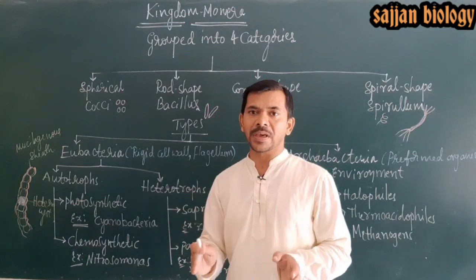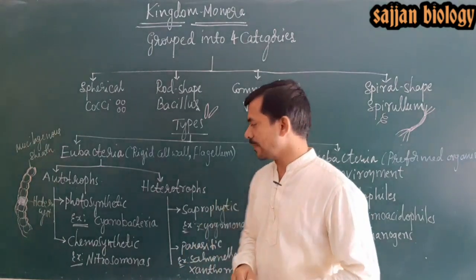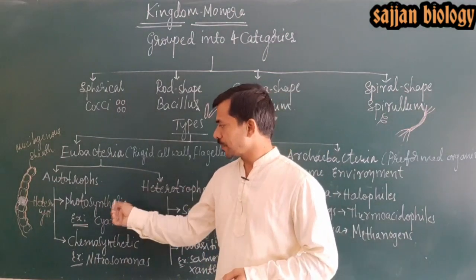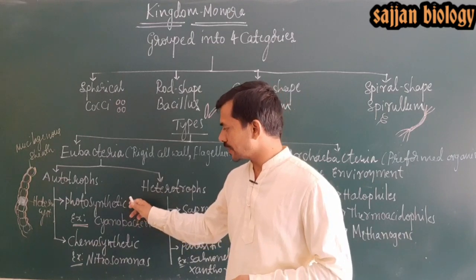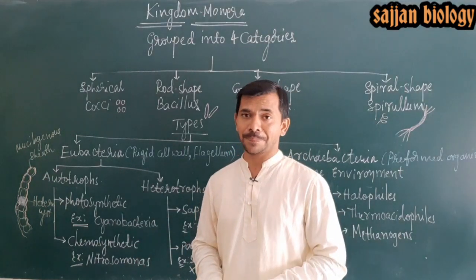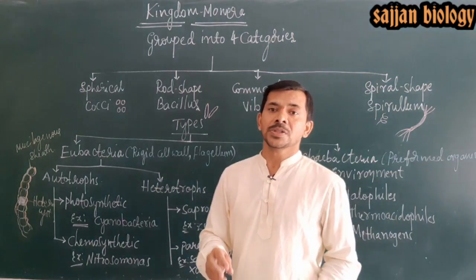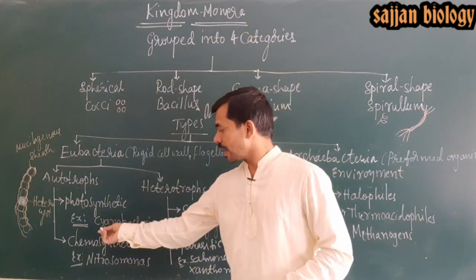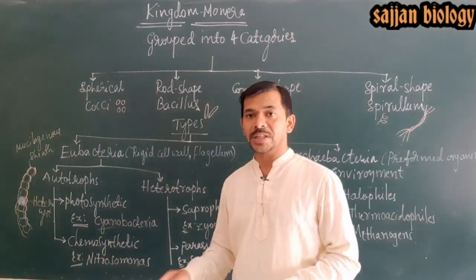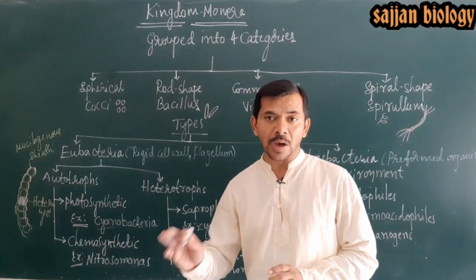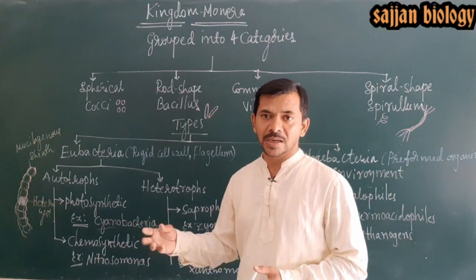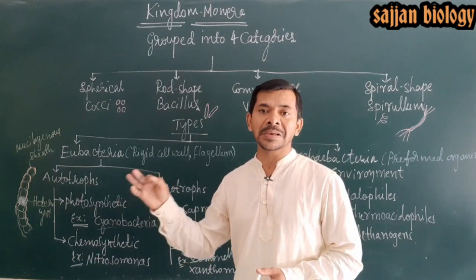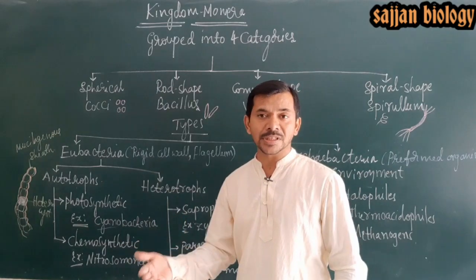Auto means self, and trophic means synthesis — hence autotrophic. Hetero means different, so heterotrophic means depending on others for synthesis. The most commonly known autotrophic bacteria are cyanobacteria, also called blue-green algae. These algae contain chlorophyll A, like green plants, and hence can synthesize their own food.